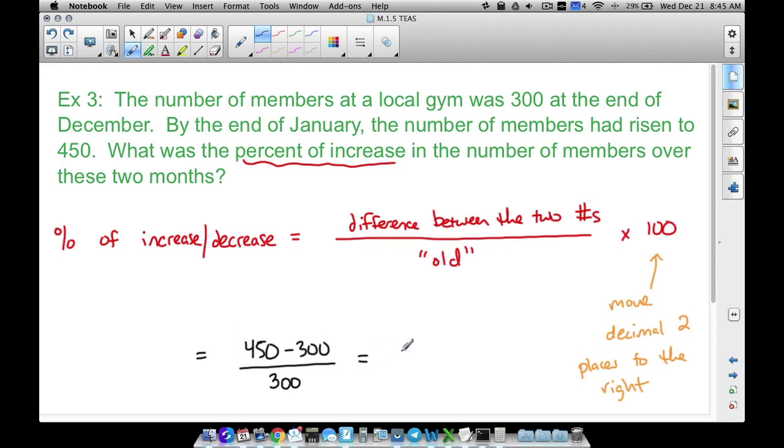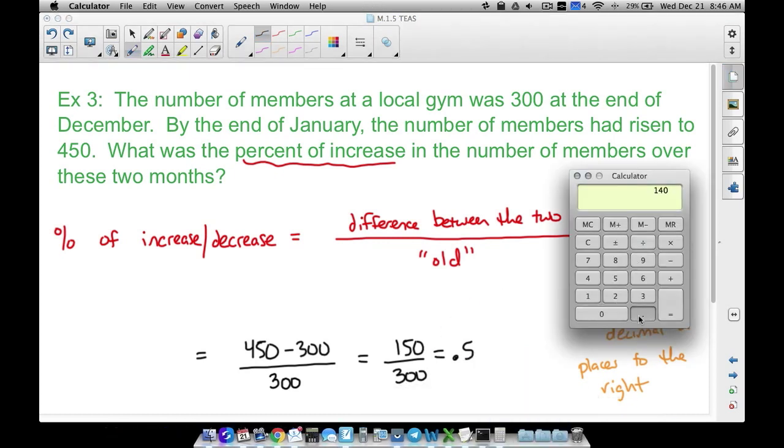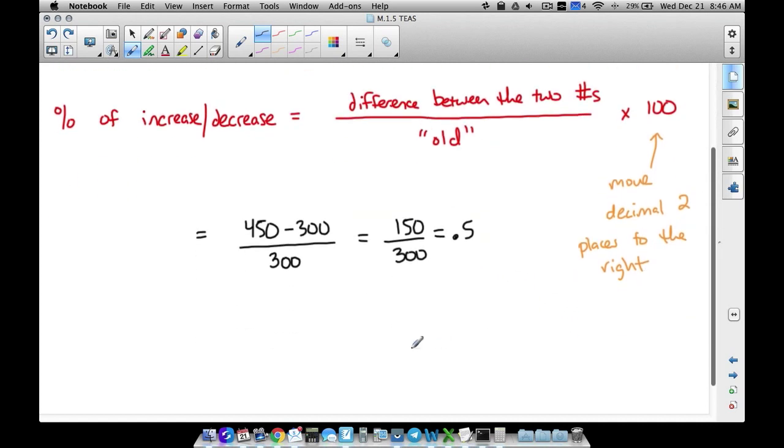So let's go ahead and subtract these. 450 minus 300 is 150, we divide that by 300, that's going to give us 0.5. Now I know I said we got to multiply this by 100, well if you do that all we're doing there is taking that decimal and we're going to move it two places to the right when we multiply by 100. So if we multiply this by 100, 0.5 times 100, therefore we have our percent of increase.